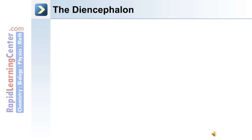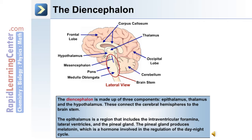Near the limbic system is the diencephalon, made up of three components: the epithalamus, the thalamus, and the hypothalamus, which connect the cerebral hemispheres to the brainstem. The epithalamus includes the intraventricular foramina, lateral ventricles, and the pineal gland. The pineal gland produces melatonin, which is involved in the regulation of the day-night cycle.